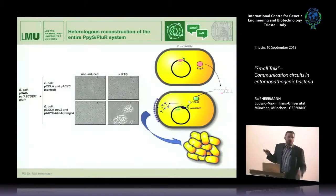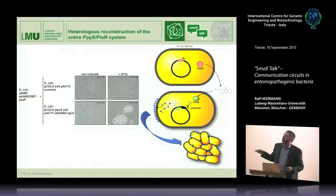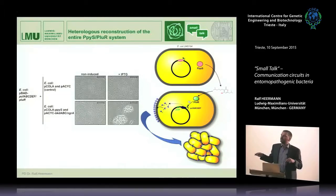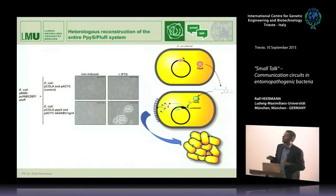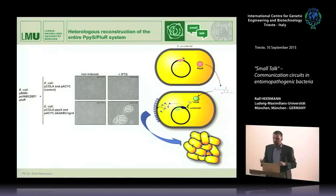We also wanted to confirm whether there is an exchange between bacteria. We had the E. coli strain that produces the photopyrone and the E. coli strain that carries the PCF operon and PLU-R. When we mix these two strains together, E. coli forms cell clumps — and this cannot be endogenous because we have just a producer strain and a responder strain. One strain produces the pyrone, the other receives the signal, makes the clumping factor, and all cells clump together. This demonstrates that photopyrones are really used for communication: one cell produces the molecule and the signal is received by other cells.